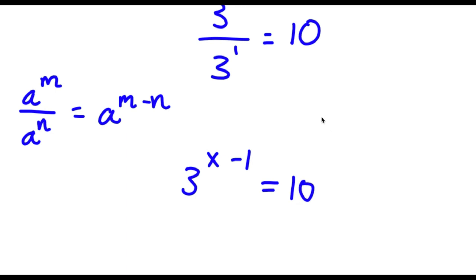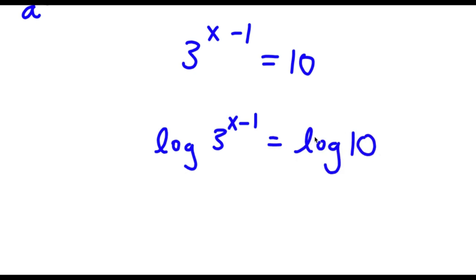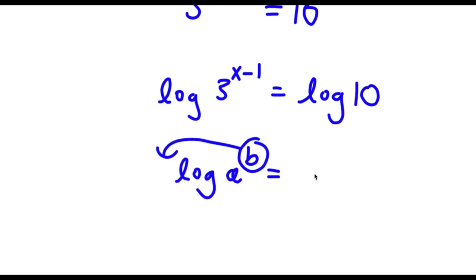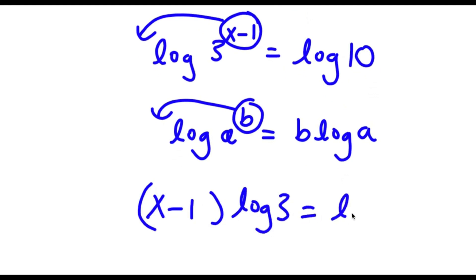Now to solve this I'm going to take the log on both sides. So I have log of 3 to the power of x minus 1 is equal to log 10. Using the power rule, I can move x minus 1 to the front. So this becomes x minus 1 times log 3 is equal to log 10. Then dividing both sides by log 3, these two cancel out.